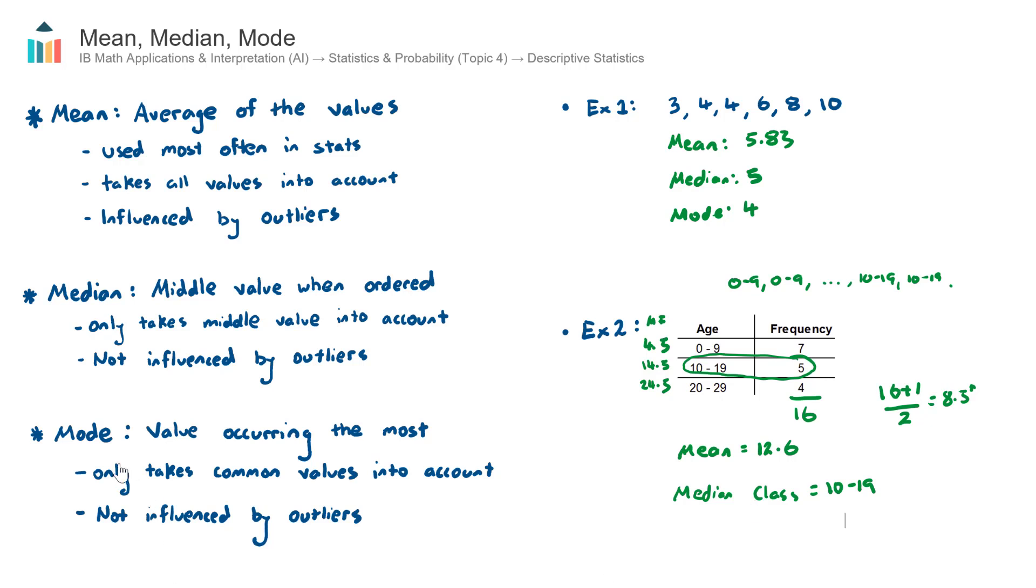Finally, my mode class, which we call the modal class. Which class is most frequently occurring? I can simply look down the frequency column, see which one has the highest value, that is 0 to 9. So out of this group of 16, the class that occurred the most, the modal class, will be 0 to 9.